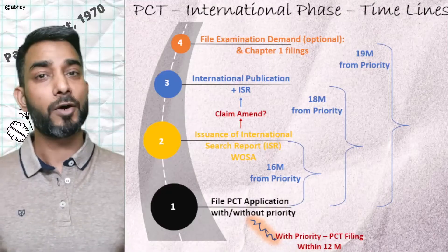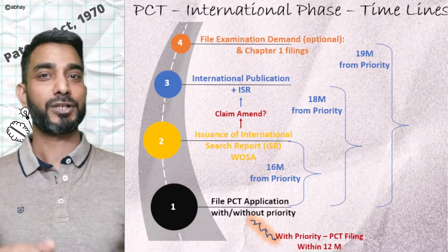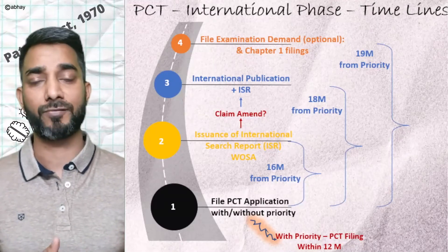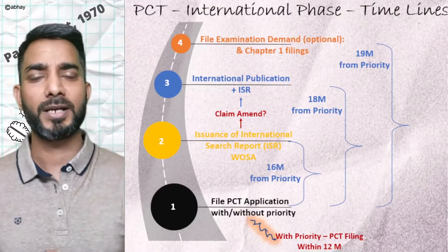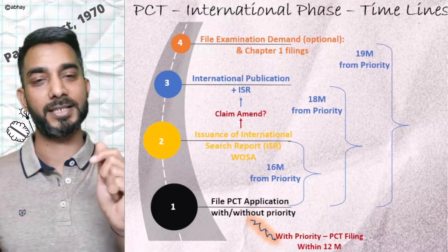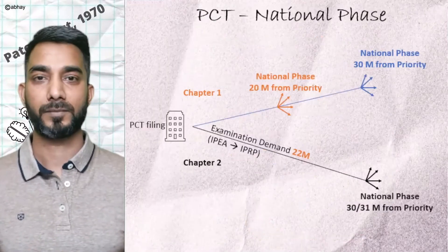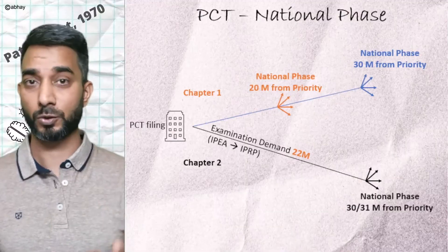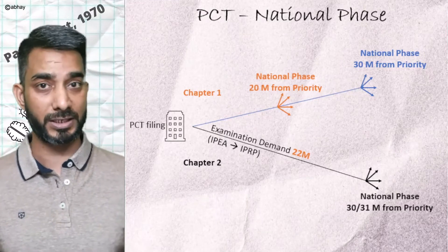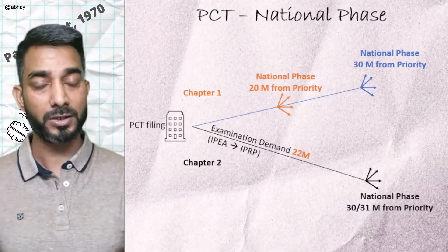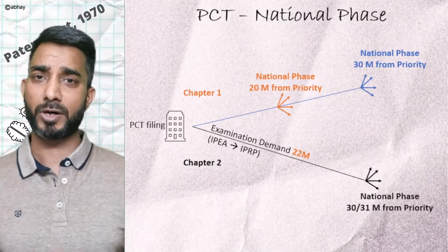Once this stage is completed, the application is published — this is called international publication — and the ISR is also published along with the application. At this point, the applicant decides whether they wish to file a demand for examination through one of the IPEAs. This must be done within 22 months from the earliest priority date. From here, the activities pertaining to the filing of the national phase application begin. Two sets of countries exist: those providing 30-31 months and those providing a shortened timeframe of 20 months for entering the national phase.